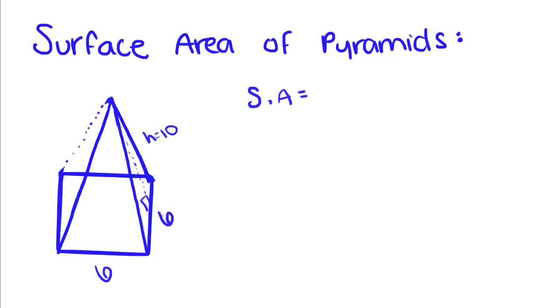Let's do one more example. We have a square base 6 by 6 and a height of 10. We're going to find the area of the square: 6 times 6, plus 4 times one-half times base times height.